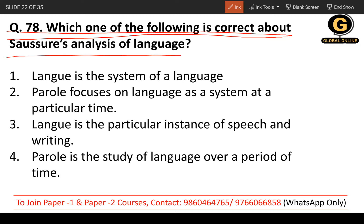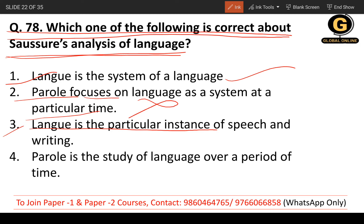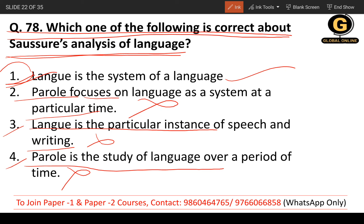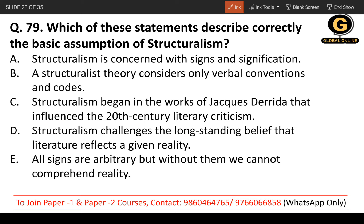Question 78: Which one of the following is correct about Saussure's analysis of language? Langue is the system of a language — correct, because parole refers to individual use at a particular time, while langue is the whole system. 'Parole focuses on language as a system' — incorrect. 'Langue is a particular instance of speech' — incorrect. 'Parole is the study of language over a period of time' — incorrect. The correct option is the first one.